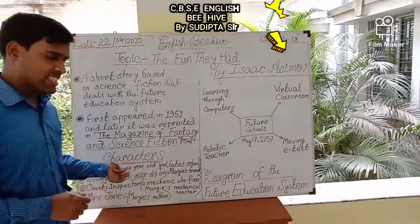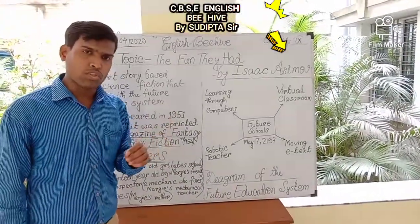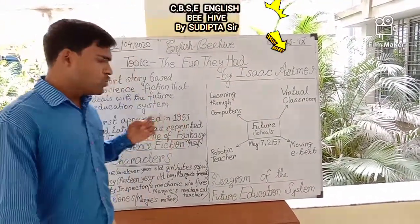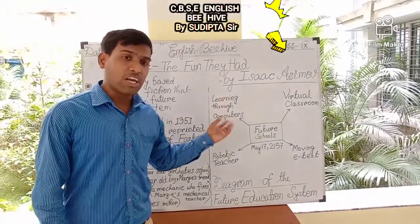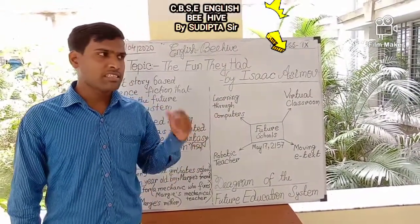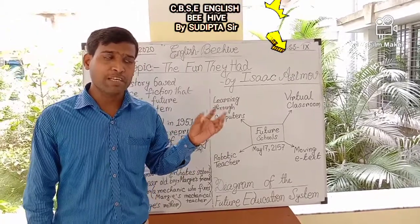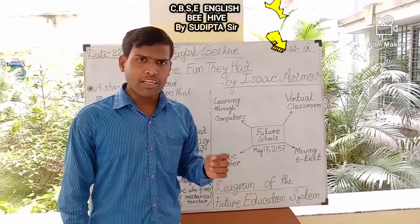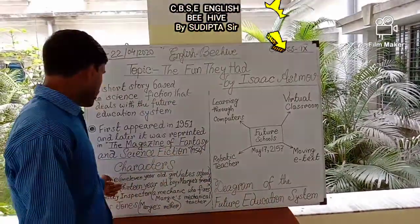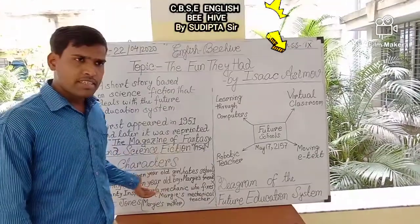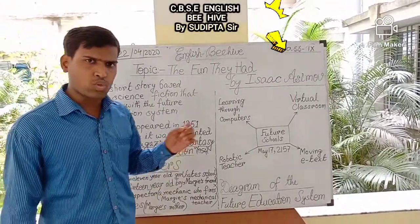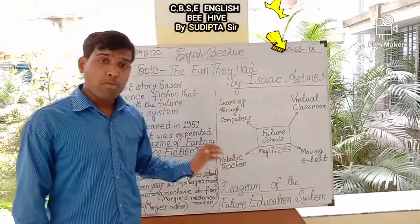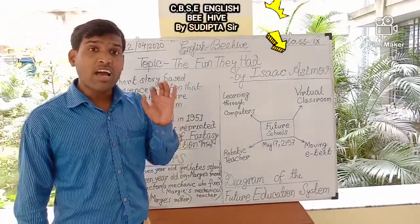The central character of the story is Margie, who does not like school. You might be surprised that even in this virtual classroom setup, Margie dislikes her school. In this virtual classroom, Margie has to learn by herself and she does not have any friends there.